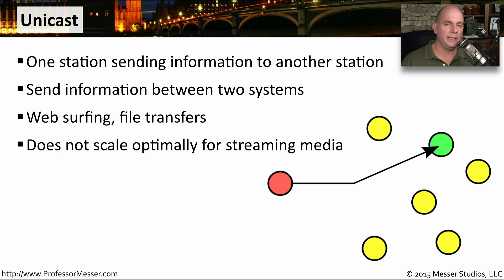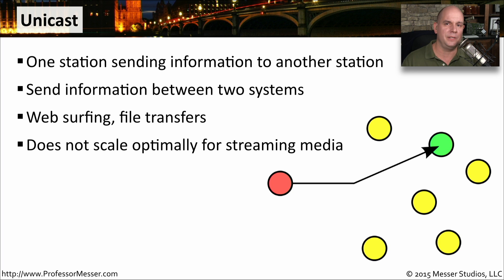This type of communication is widely used, even if it doesn't scale very well. Consider sending information from a streaming video server like YouTube — this video is being sent from YouTube directly to you. If somebody else was watching this video at exactly the same time, a completely separate session is created and a completely separate stream of information is sent across the network. If 100 people are watching at the same time, YouTube is sending 100 separate streams out from their server individually via unicast.